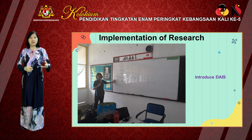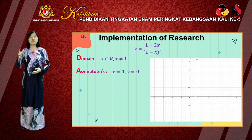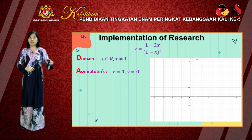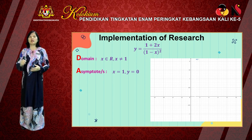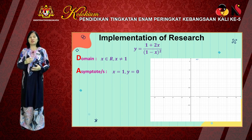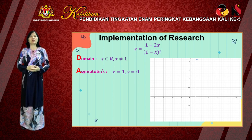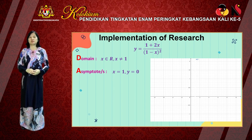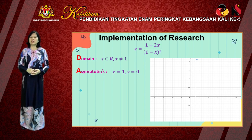Then we started to introduce TASTE. Let me demonstrate how to use the mnemonic TASTE with this function. First, the letter D is for domain. For this question, the domain is x is an element of real numbers and x is not equal to 1. Followed by the letter A, which stands for asymptotes. There are some questions with asymptotes and some without, so students need to determine whether there is any asymptote. In this case, there are two asymptotes: x equals 1 and y equals 0. So we draw the lines for the asymptotes.